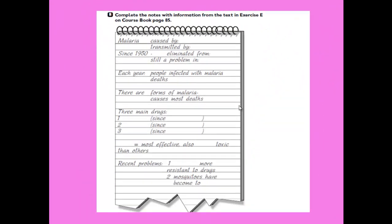Part B: complete the notes with information from the text in exercise E, course book page 85. The template includes: malaria caused by, transmitted by, since 1950 eliminated from, still a problem in, each year people infected with malaria and deaths, number of forms of malaria, causes most deaths, three main drugs, most effective, and recent problems.